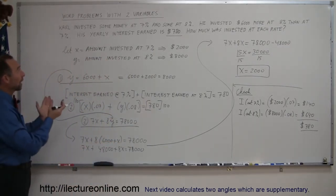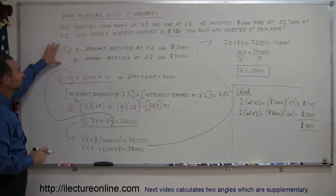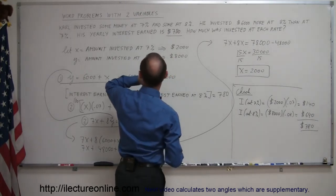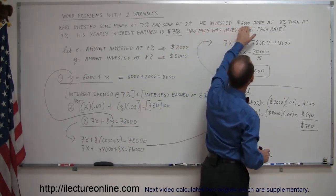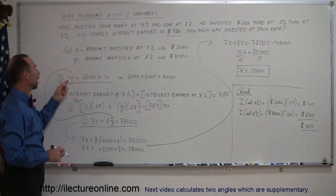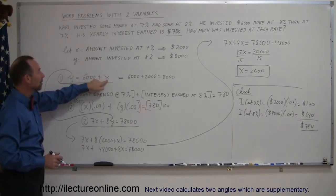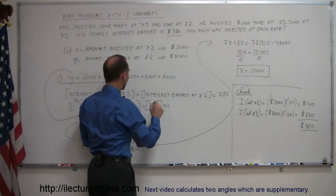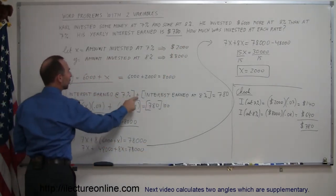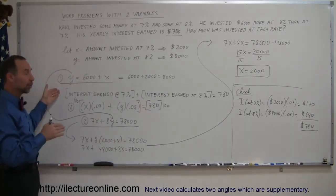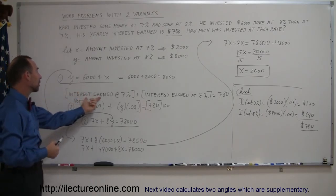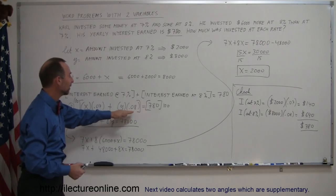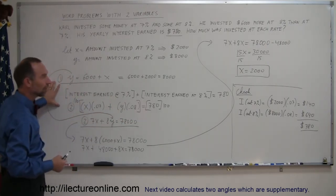Quick recap: when solving with two variables, first define your two variables carefully. Then find two equations from the problem. Here, the person invested $6,000 more at 8% than at 7% — that's equation one. The total interest earned is $780 — write it in English first, then express mathematically as amount times rate plus amount times rate equals total. With two equations and two unknowns, solve simultaneously using substitution.